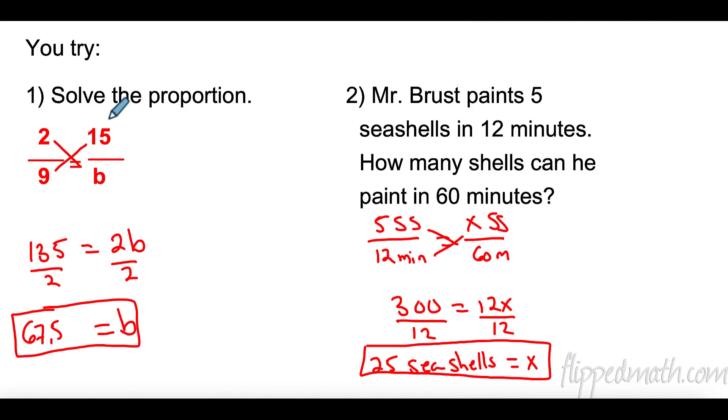So, if we look here, we're going to solve this proportion by cross multiplying. Nine times 15 is 135. Two times B is 2B. Divide both sides by two. And you get 67.5.